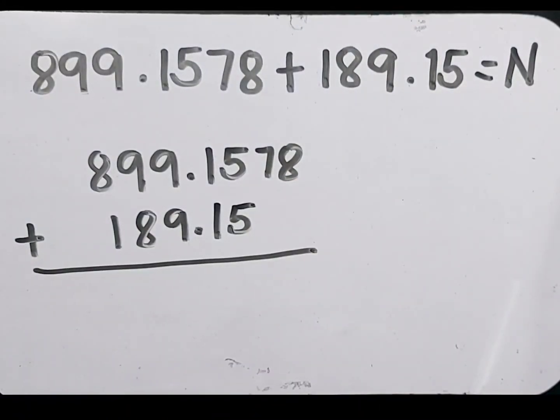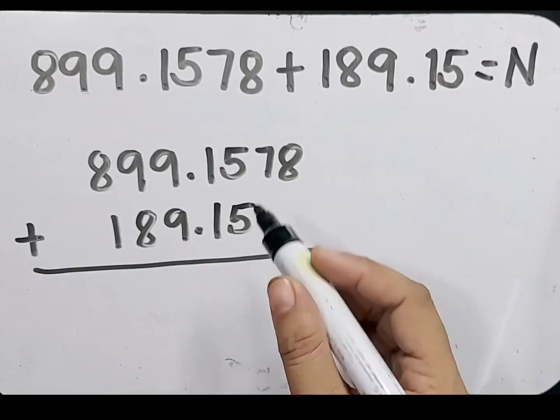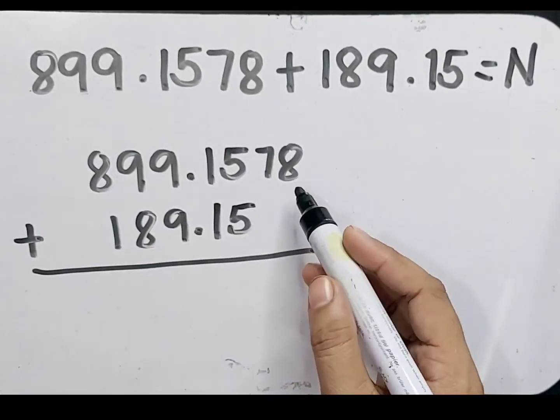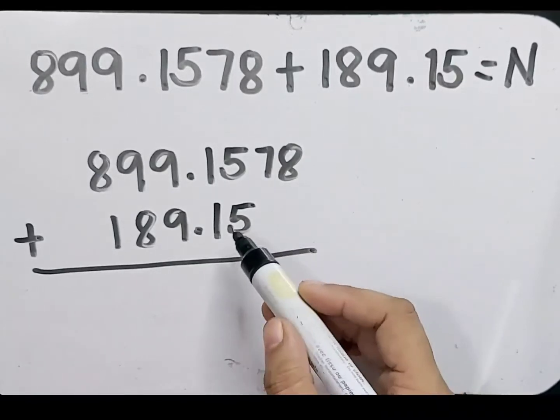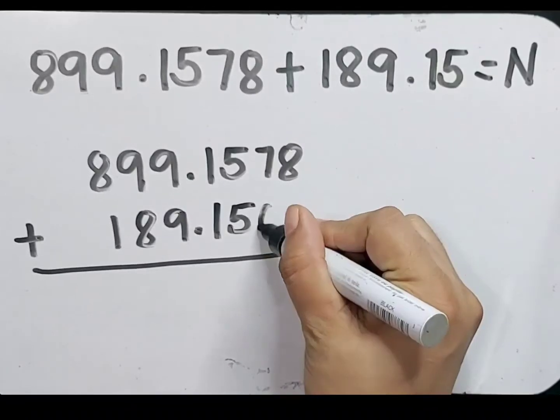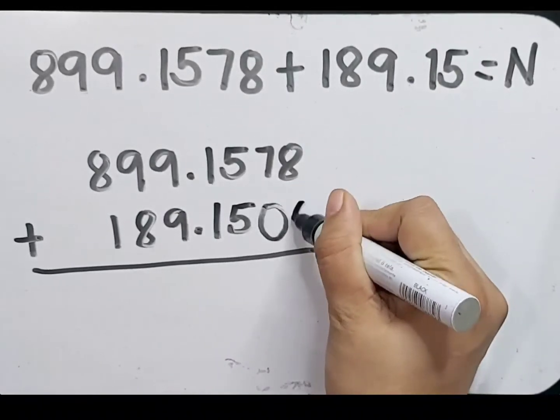The next step is to make sure that the numbers have the same length in the decimal places. So in the first addend, we have 1, 2, 3, 4 digits. So let's make the other addend also 4 digits by adding zero. Let's add two zeros.